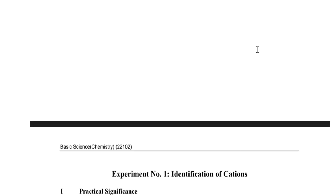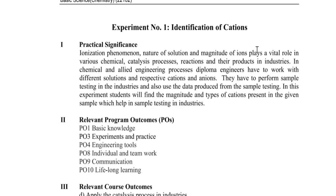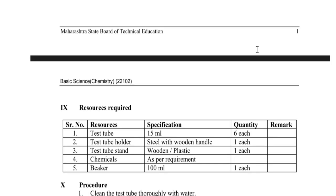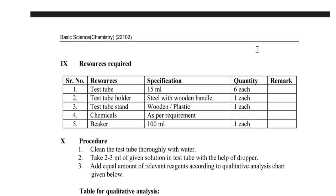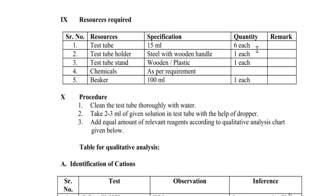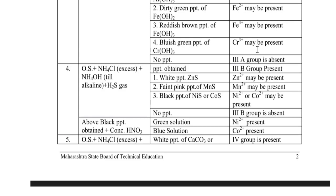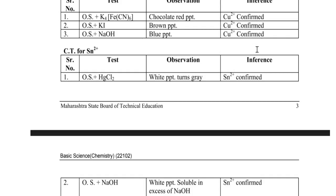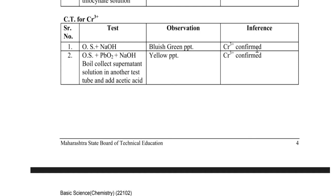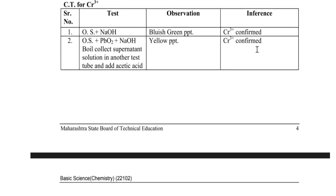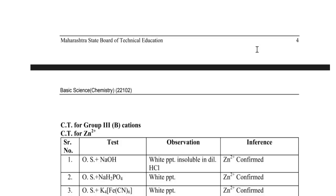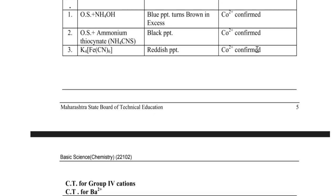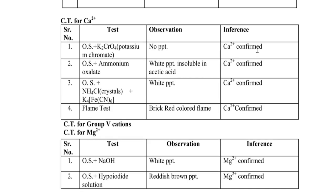This is experiment number one: identification of cations. In this video, we are going to see how to write the manual to get maximum marks. In this experiment, there is identification of cation and confirmatory test of cation. You have to take two solutions and write down the results.